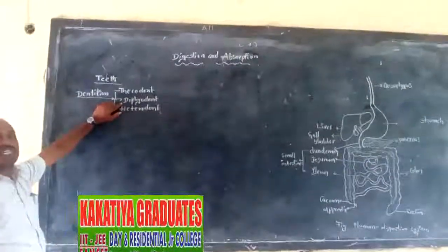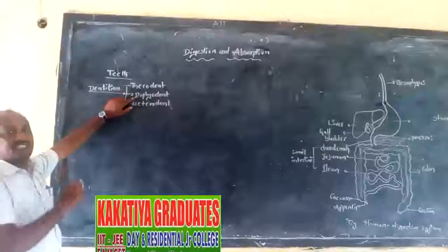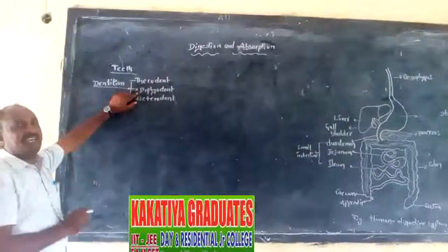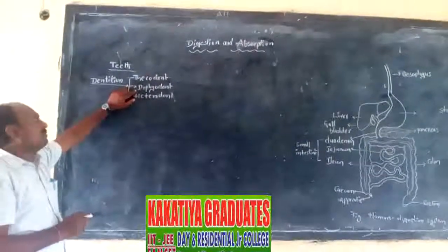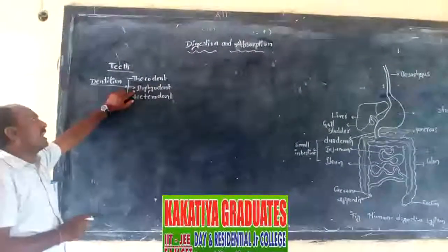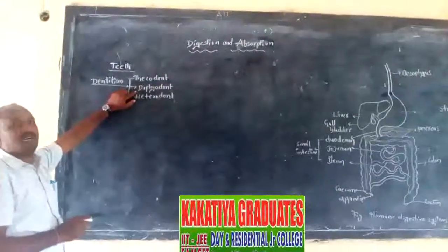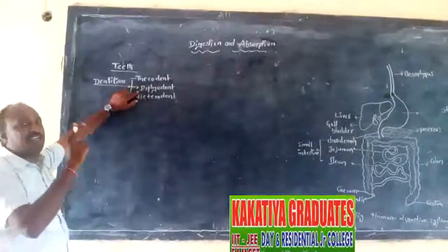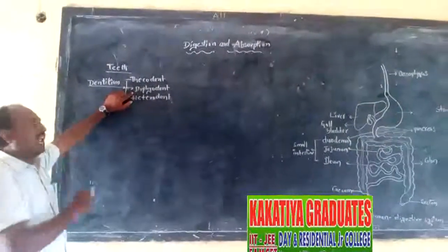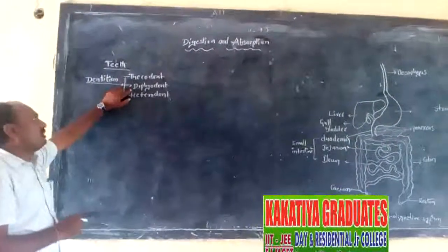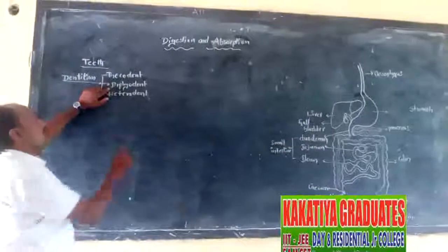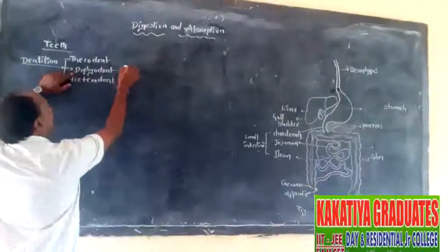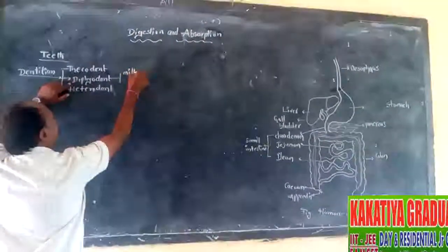Diphyodont means two sets of teeth appear in their lifetime. The first set of teeth is called milk teeth.